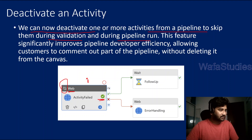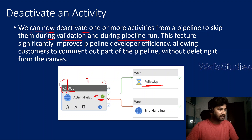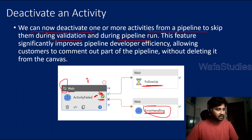When you deactivate an activity, you can mark it as successful, so when the pipeline runs, it will skip that activity and directly run the next one. That way you can test and validate subsequent activities without running the deactivated one. If you want to test a failure path, you can mark the deactivated activity as a failure, so the pipeline will directly run the failure branch activity.